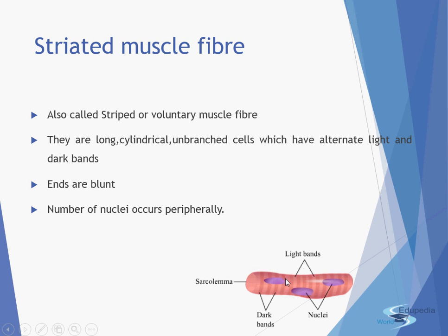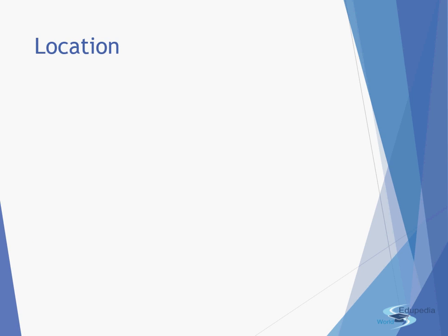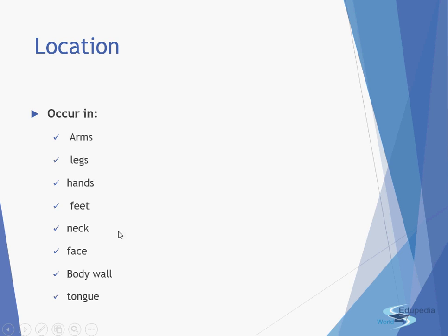The nuclei occur peripherally — you can see them at the corners, not in the center. These muscles are known as voluntary muscles because they work under the control of our will. They are located in any part of the body which you can move under your will: the arms, legs, hands, feet, neck, face, body wall, and the tongue.